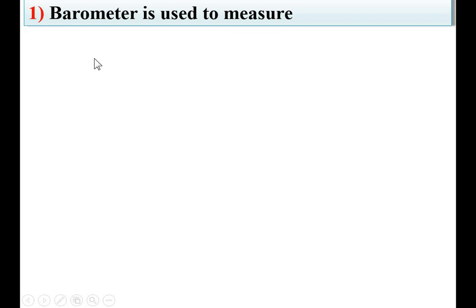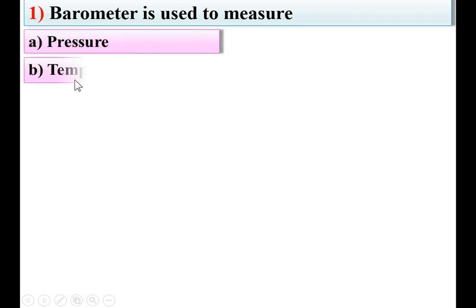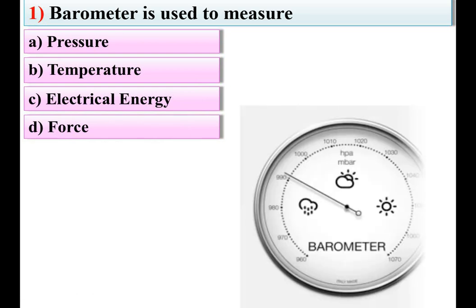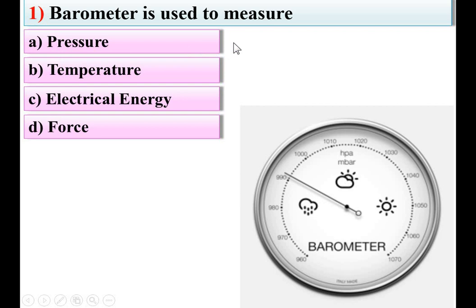Barometer is used to measure — options: pressure, temperature, electric energy, force. A barometer is used to measure pressure, and specifically the atmospheric pressure of the air. So A is the right answer.